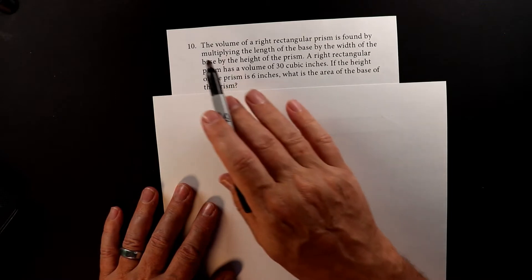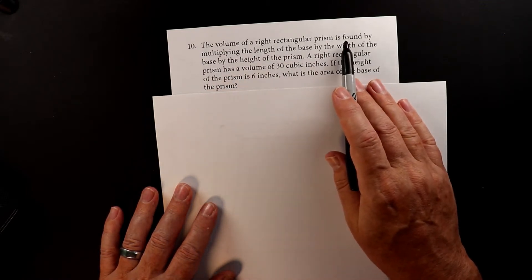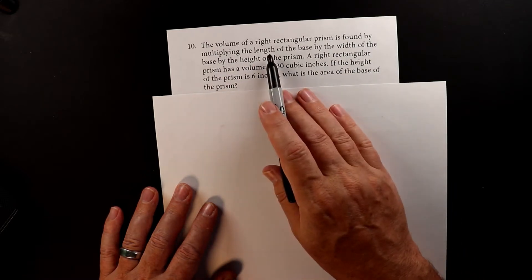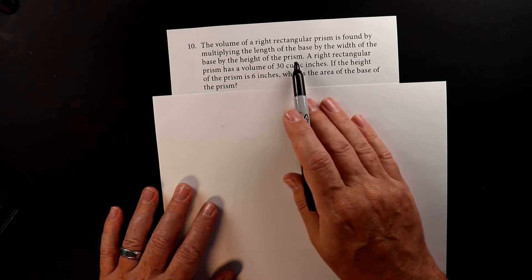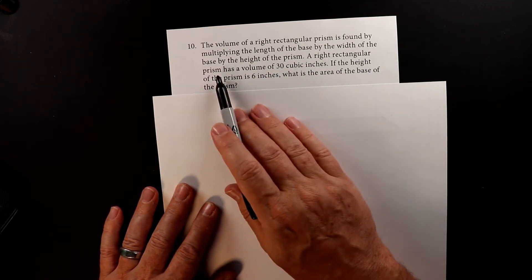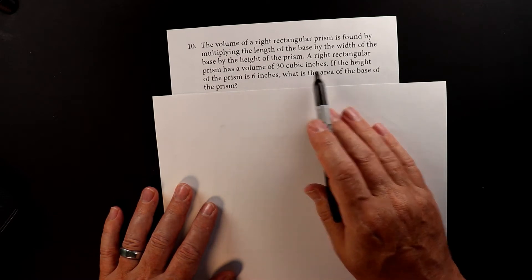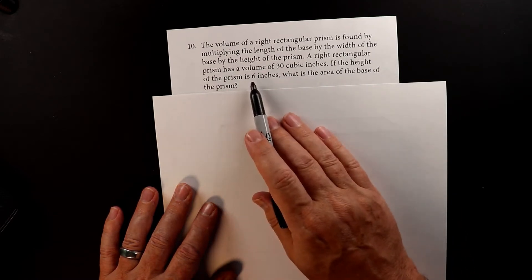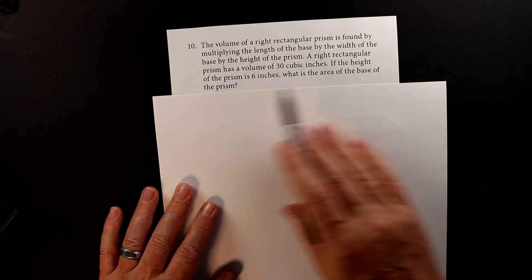This is number 10. The volume of a right rectangular prism is found by multiplying the length of the base by the width of the base by the height of the prism. A right rectangular prism has a volume of 30 cubic inches. If the height of the prism is 6 inches, what is the area of the base of the prism?